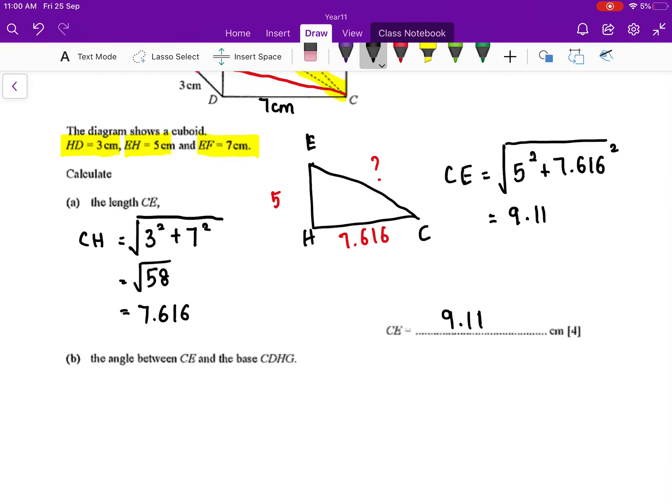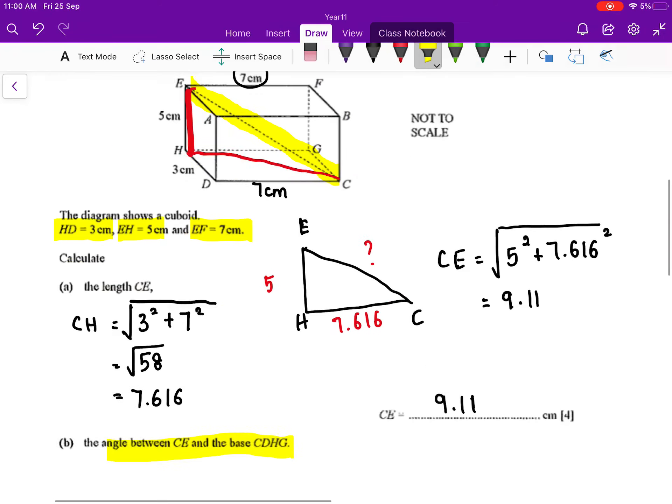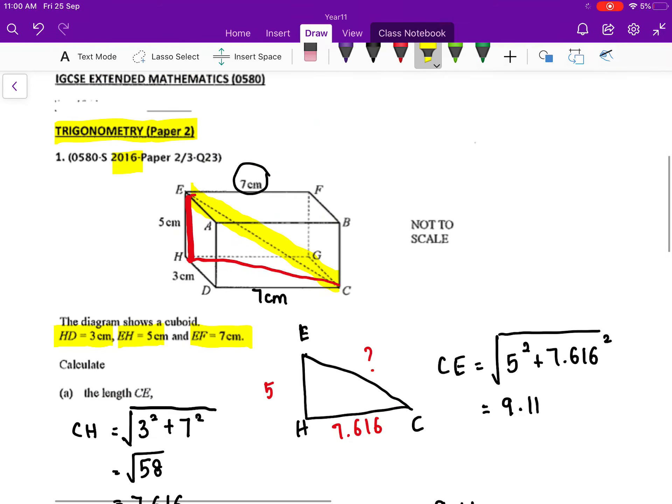Okay, moving on to the next one. The question wants you to calculate the angle between CE and the base CDHG. So CE is the one that we have already highlighted in yellow. So the base, as they have mentioned here, is the one at the bottom here.